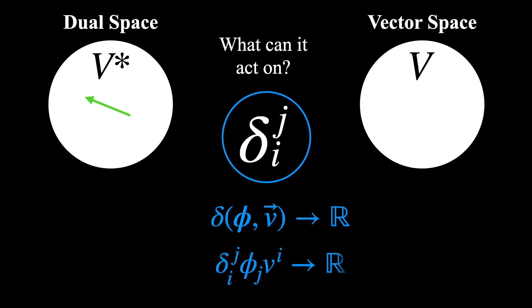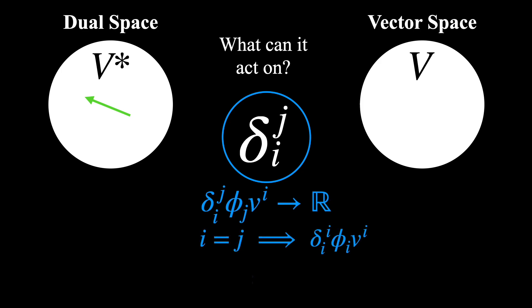We can therefore answer the second question by saying that the Kronecker Delta tensor acts on one dual vector and one vector. In Einstein notation, it would look like this. If we then evaluate this expression, all the terms where i is not equal to j are 0, so we are only left with the terms where i equals j. And if i runs from 1 to 3, we get the following.